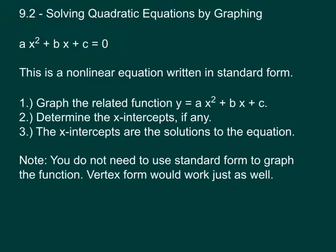What I do is take three steps. First, graph the related function, y equals ax squared plus bx plus c. That's the same thing as what I have here, but I replace the 0 with y. Then determine the x-intercepts, if there are any, and those are going to be the solutions to the equation. We've already talked about this before. The solutions to the equation are going to be equivalent to the zeros of the function, the x-intercepts.